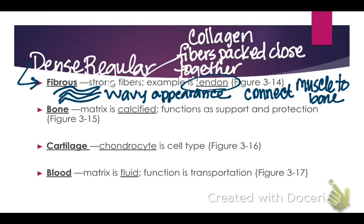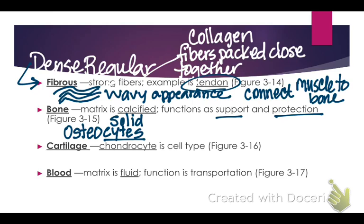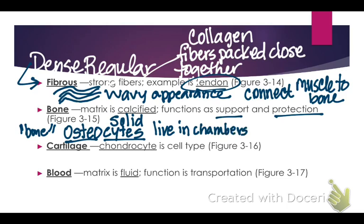Bone is a solid connective tissue because the matrix is calcified, which makes it solid. Bone provides support, protection, and movement — movement would not be possible without our skeletal system. We have cells in our bones called osteocytes. 'Osteo' means bone — think of osteoporosis. Osteocytes are the bone cells, and they live in chambers called lacunae.